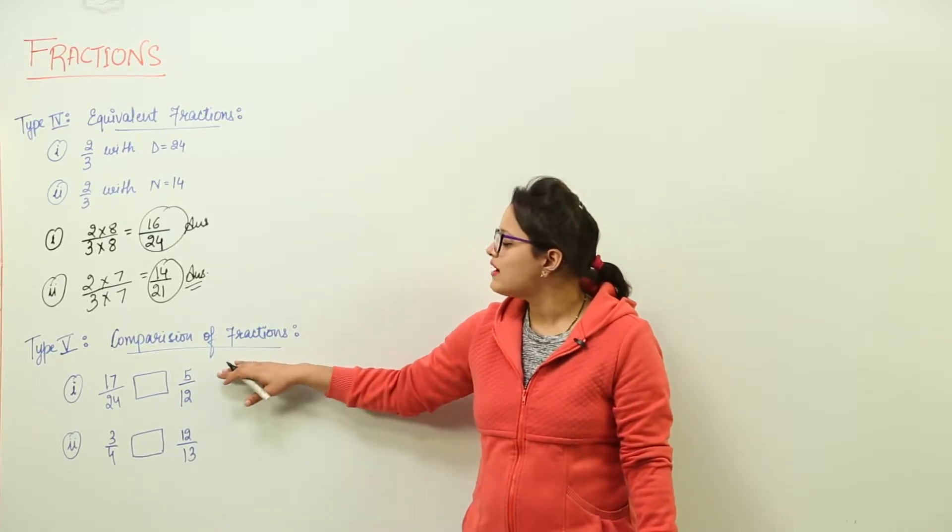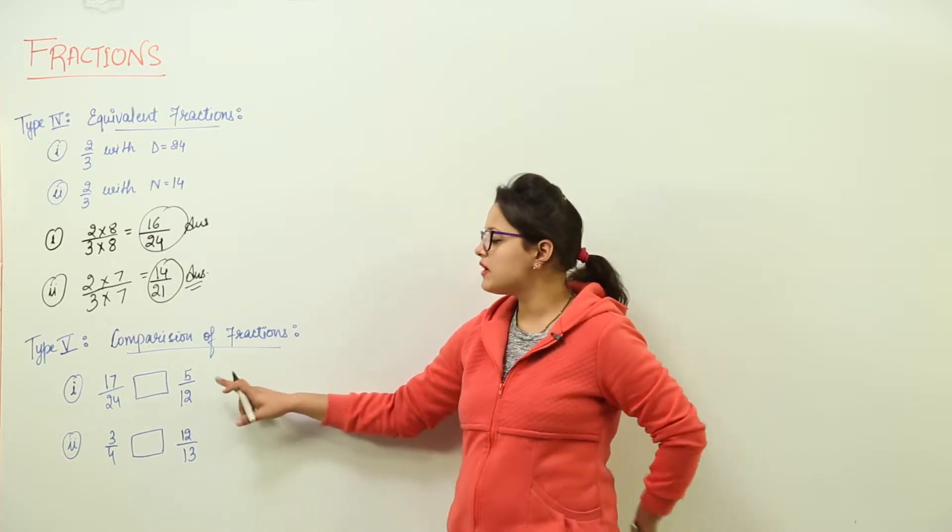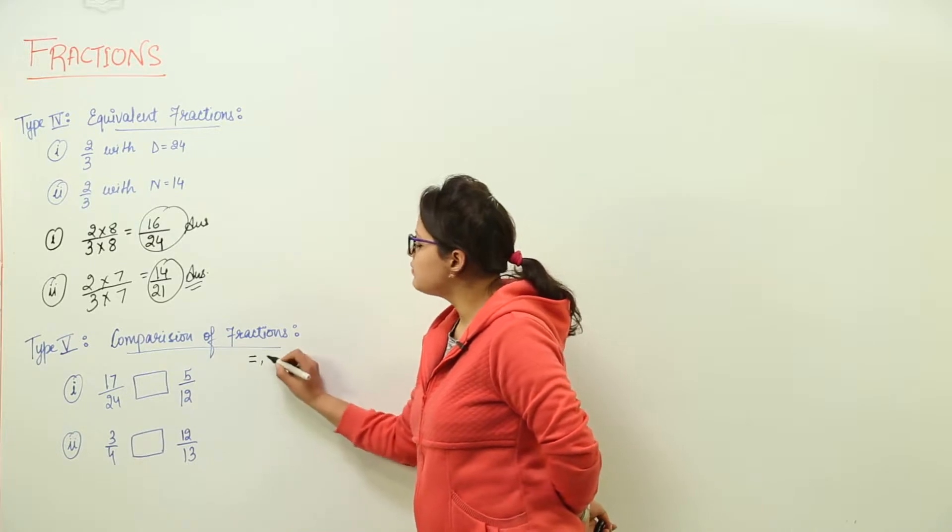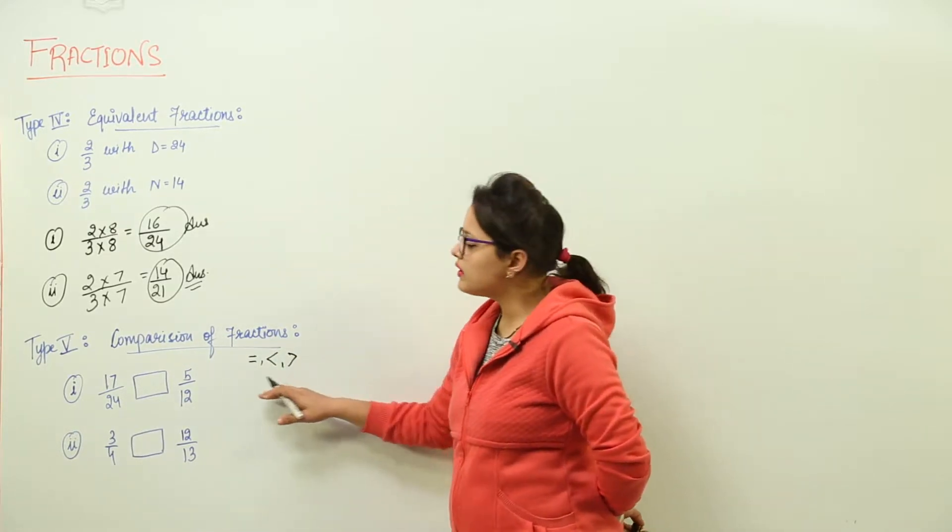The next type is where we have to compare the fractions in the first part and second part. That means we have to identify whether the fractions are equal to each other, which one is greater or smaller. So how do we compare that?